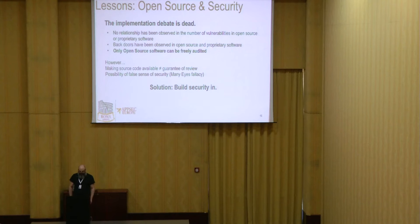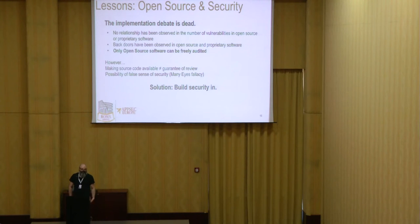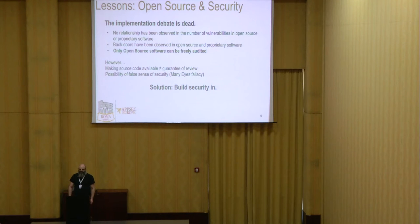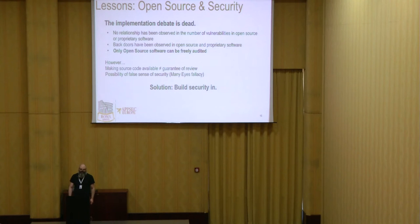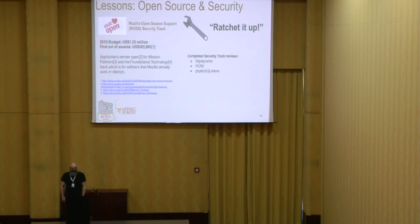The debate about which is more secure — open source versus closed source proprietary software — is pretty much dead. Ultimately there really is no relationship between the number of vulnerabilities observed in open source versus closed source software. But only open source software can really be fully and freely audited. You can look at object code for proprietary applications, but it takes a lot more work and a different skill set, and you don't necessarily have access to all the design documents — and you usually can't email the developers and ask them questions like you can with us.